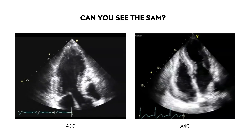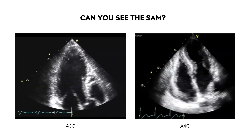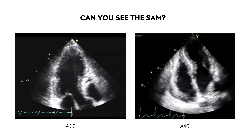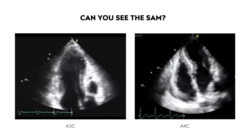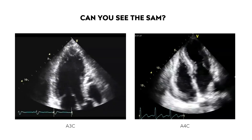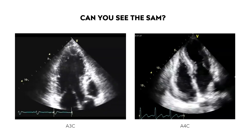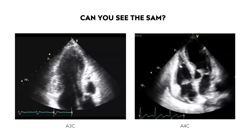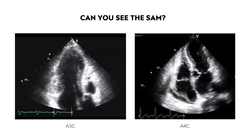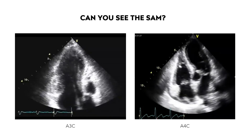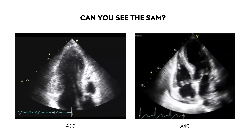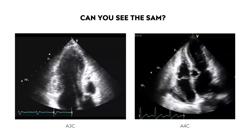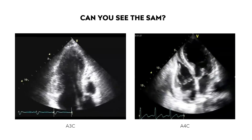Here are two clips of SAM. In the apical 3-chamber view, slowed to half speed, can you see the anterior leaflet of the mitral valve touch the septum during systole? Now in the apical 4-chamber view — also slowed down — there is still an anterior leaflet of the mitral valve touching the septum, leading to LVOTO.